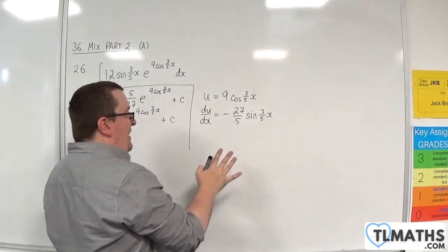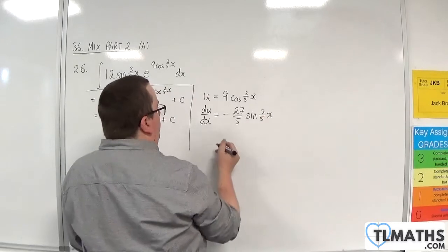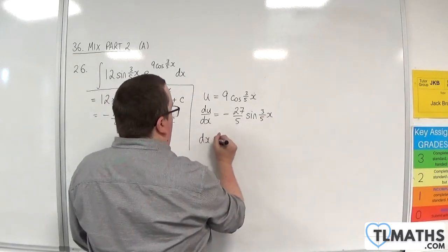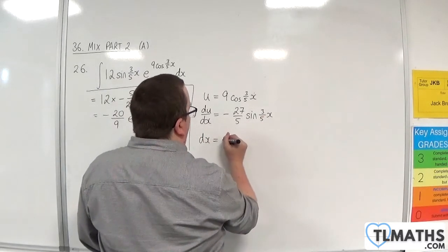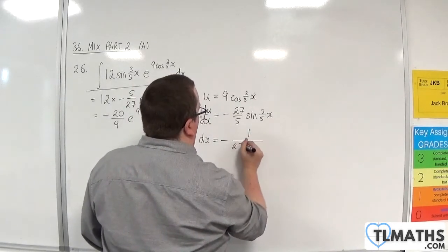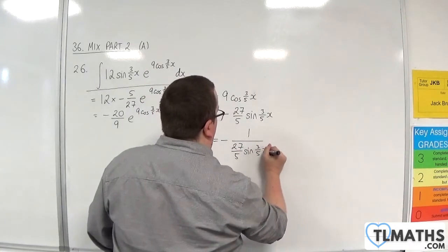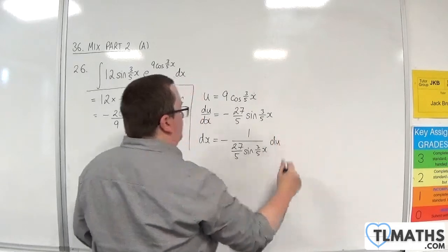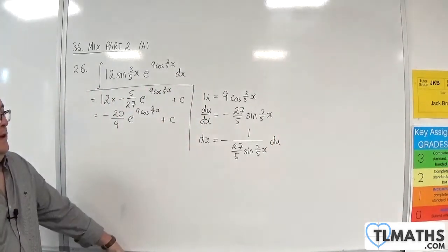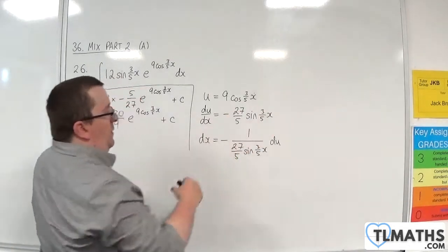Now, I need to rearrange this to get dx equals. So multiply it by the dx, divide both sides by this. So I'm going to get dx is equal to minus 1 over 27/5 sine of 3/5 x du. So I've divided both sides by that, multiplied by the dx.